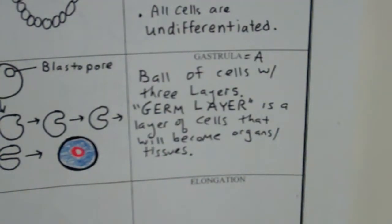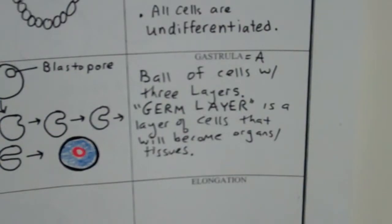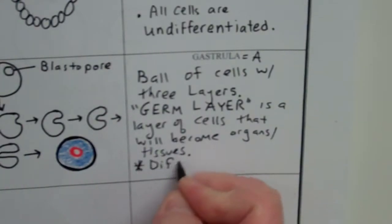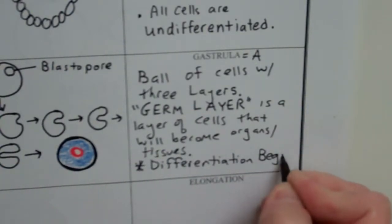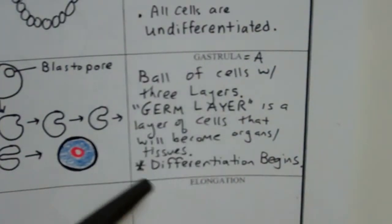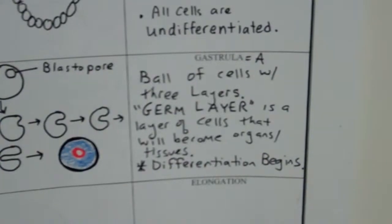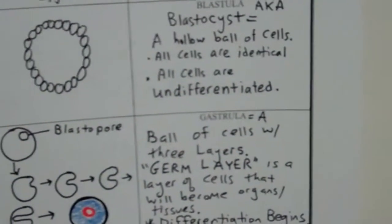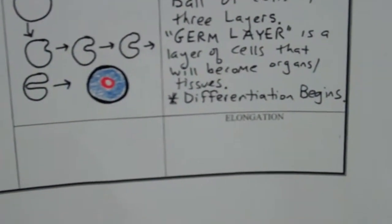So we're going to see this little gastrula developing over time and different organs and tissues are going to emerge from each of these layers. So what's happening at this point is differentiation. So differentiation begins here. Some scientists, embryologists say gastrulation, the forming of this thing, gastrulation is the most important day of your life because that's where you're getting all of your layers of cells to become all of your different organs and tissues. So we're going to move on down here to the bottom and the last stage in our story here.